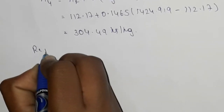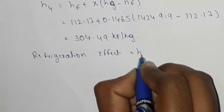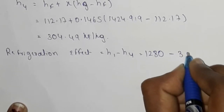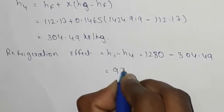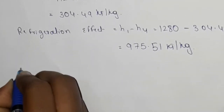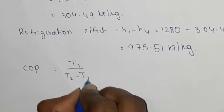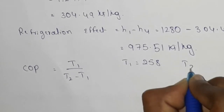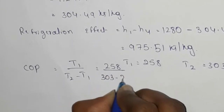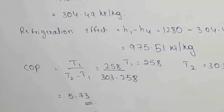The refrigeration effect for the Carnot cycle equals H1 minus H4, which is 1280 minus 304.49, giving 975.51 kilojoules per kg. The COP for the Carnot cycle is T1 divided by (T2 minus T1), where T1 equals 258 and T2 equals 303. So COP equals 258 divided by (303 minus 258), which equals 5.73.